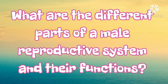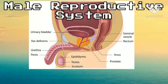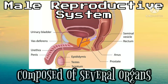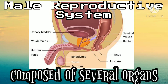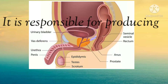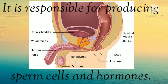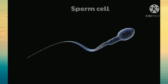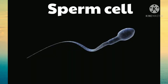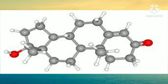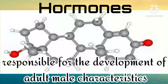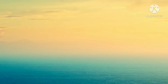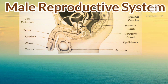What are the different parts of a male reproductive system and their functions? The male reproductive system is composed of several organs. It is responsible for producing sperm cells and hormones. A sperm cell is important to fertilize an egg cell. Hormones are responsible for the development of adult male characteristics.